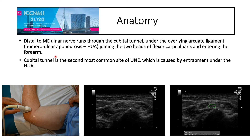Distal to the medial epicondyle, the ulnar nerve runs to the cubital tunnel under the overlying arcuate ligament — the so-called humeral ulnar aponeurosis — that joins the two heads of the flexor carpi ulnaris. Entering the forearm, the cubital tunnel is the second most common site of ulnar neuropathy at the elbow, caused by entrapment under the humeral ulnar aponeurosis.